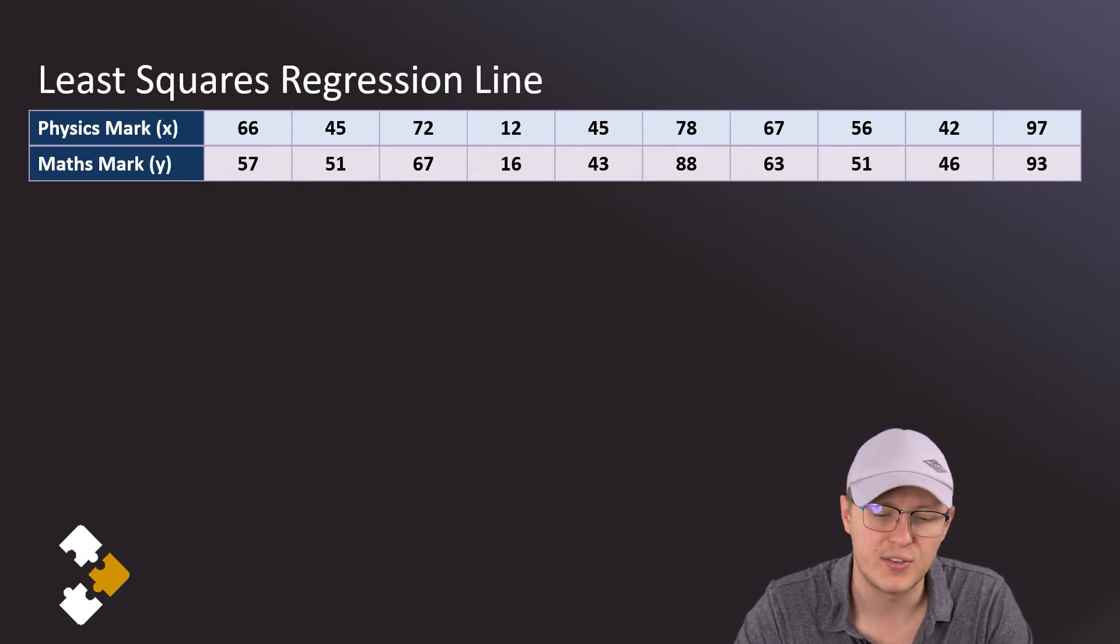And then on this calculator I get a table, and that table has two columns, one for x, one for y. And I am now going to enter the values in there. So we'll put the 66, the 45, the 72, the 12, the 45, the 78, the 67, the 56, the 42, and the 97.